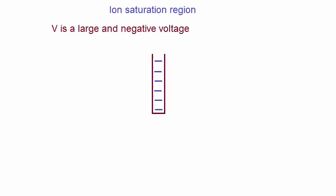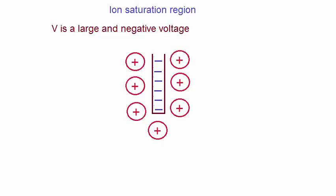Let's now look at the ion saturation region, where we place the probe tip in the plasma, and apply a large negative voltage. Naturally, the ions are attracted to it, and form a positive space charge region, which is also a positive sheath.